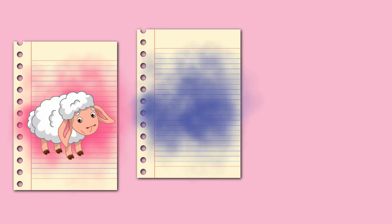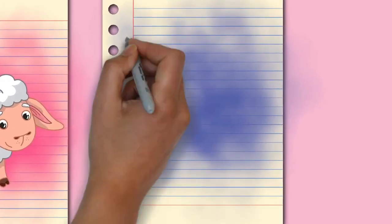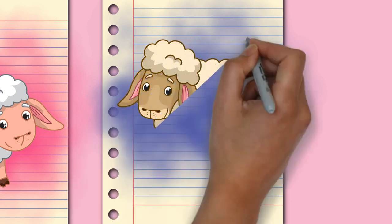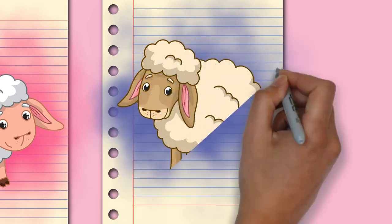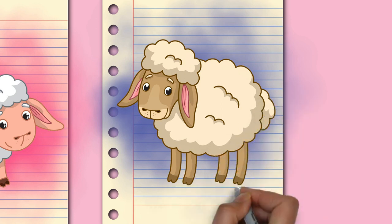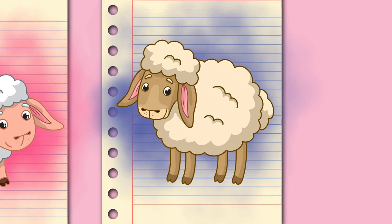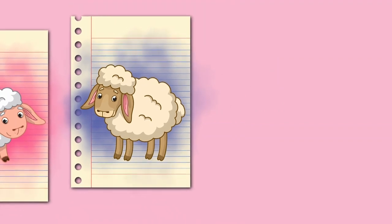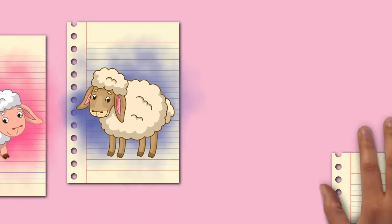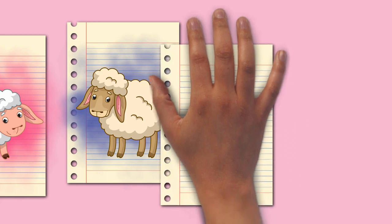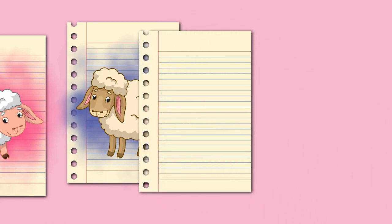The nature of the fleece varies widely among breeds, from dense and highly crimped to long and hairlike. There is variation of wool type and quality even among members of the same flock, so wool classing is a step in the commercial processing of the fiber. Depending on breed, sheep show a range of heights and weights. Ewes typically weigh between 45 and 100 kilograms (100 and 220 pounds), and rams between 45 and 160 kilograms (100 and 350 pounds).